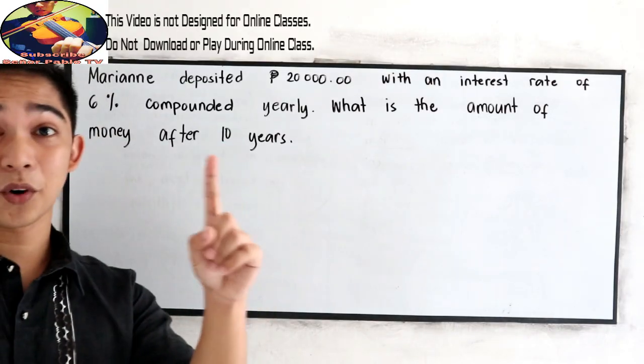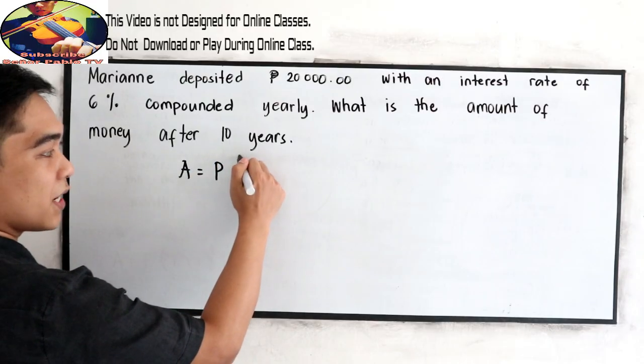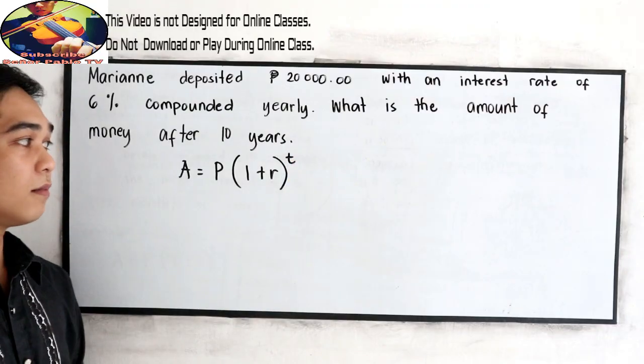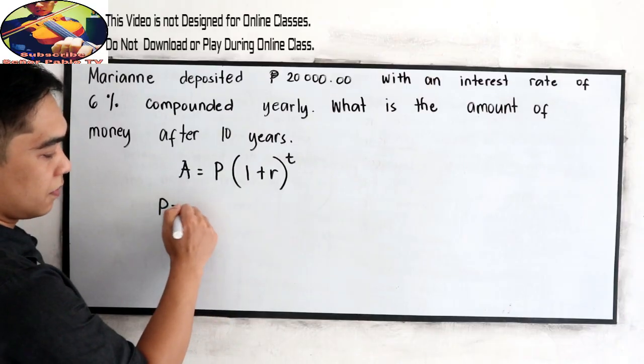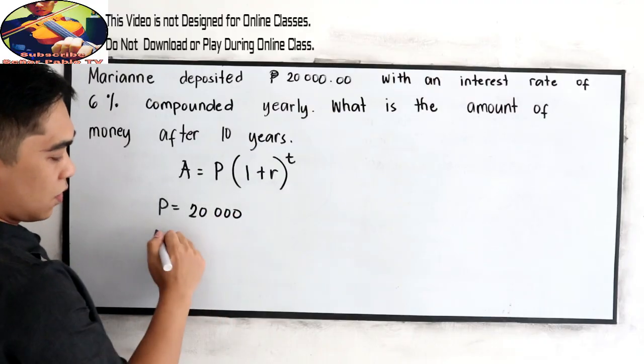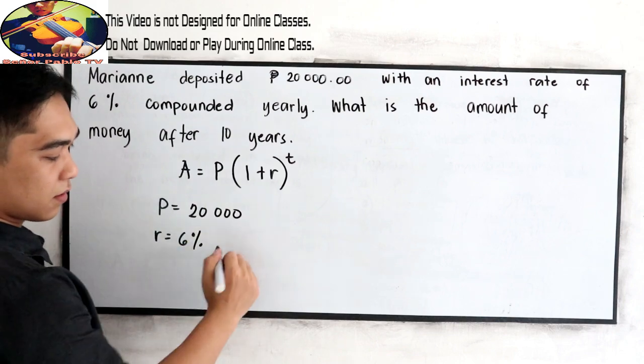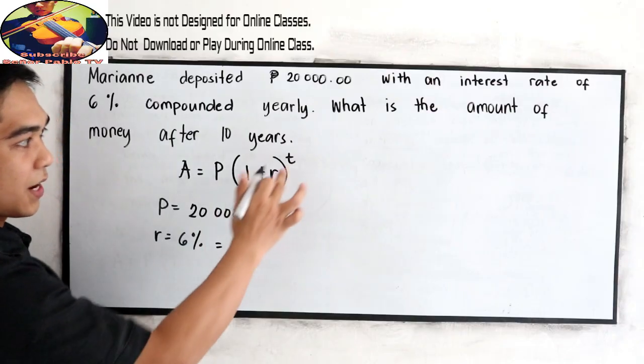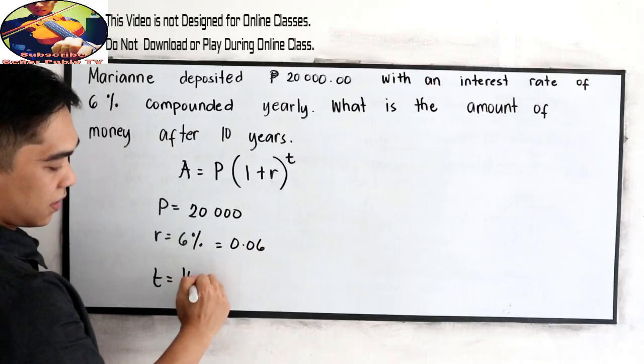First step, write our formula. The formula is P times 1 plus R raised to T. Then, analyze the given. What is P? The principal amount is 20,000. What is R? Rate is 6%. That is 0.06.